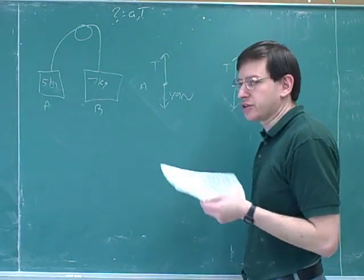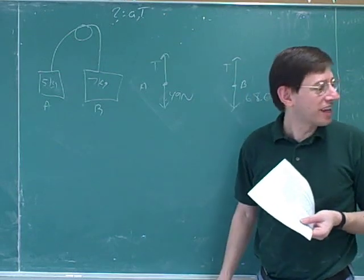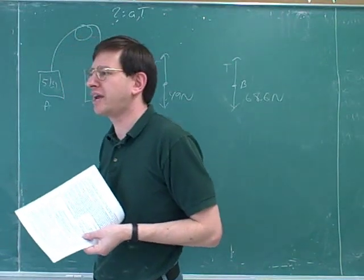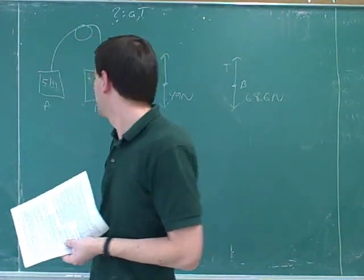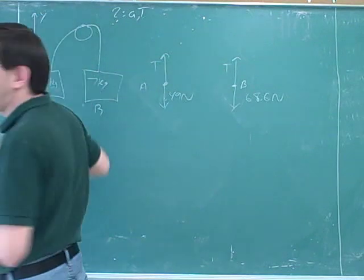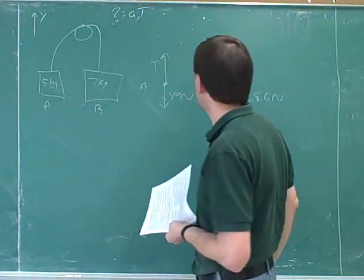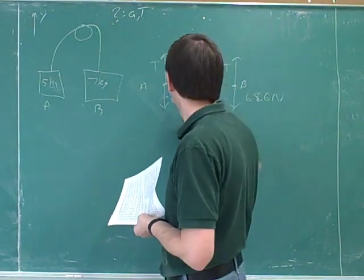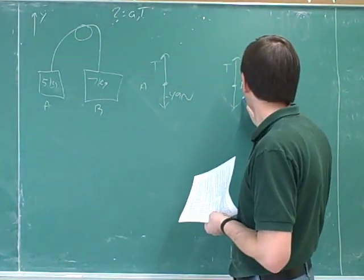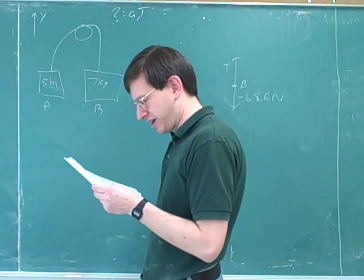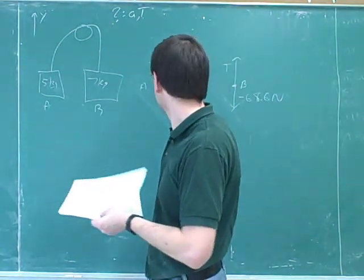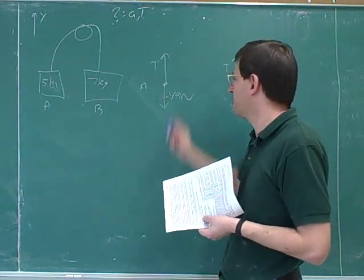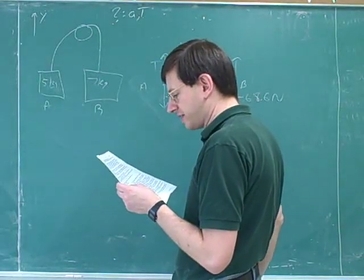We've identified all the forces on both of these objects separately. Now we should choose our axes and our positive directions. In this problem, we really don't care about the x component. I guess we might as well choose up as the positive y direction. Maybe we should have done that already because then we could have said is this weight positive or negative? Negative. And how about this one? Negative. So maybe I should rewrite this to put positive directions sooner. As soon as possible, you want to put in the signs because one of the most common mistakes that students make is forgetting the signs.